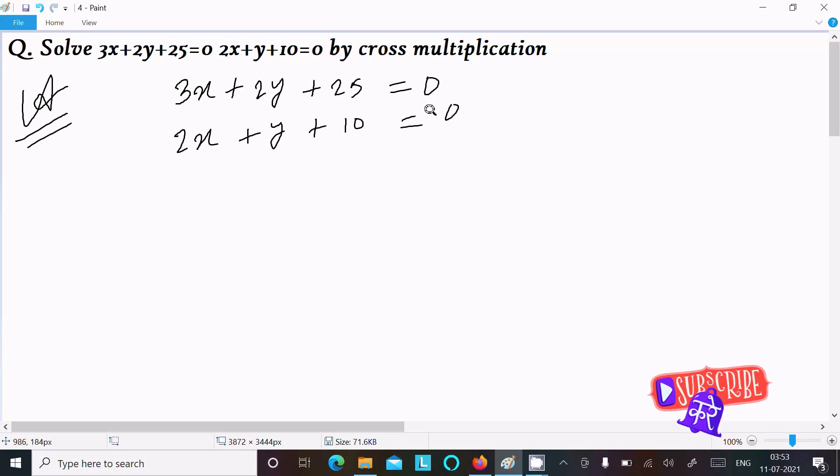Now the next equation: 2x plus y plus 10 equal to 0.